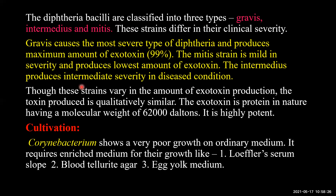The intermedius strain produces intermediate severity. Though the three strains vary in the amount of exotoxin they produce, qualitatively the toxin produced is similar in nature. Only the amount varies, and hence the severity of the disease varies. The exotoxin produced by diphtheria bacilli is protein in nature, with a molecular weight of 62,000 daltons, and it is a very potent exotoxin.